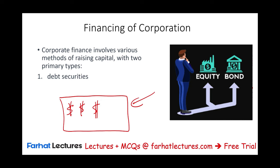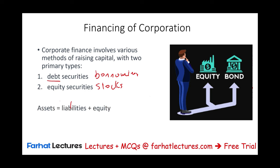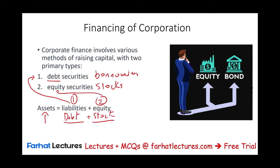Companies can raise money through two different sources: either debt securities — simply put, borrowing money — or equity securities, which means issuing stocks or ownership in the company. This takes us back to the accounting equation: assets come from two sources, liabilities (which are debt securities) and equity (which represents equity securities). So you can finance your company by issuing debt or bonds, or stocks. Those are the two main sources of financing a corporation. In this session we will look at the advantages and disadvantages of each method.